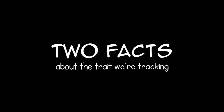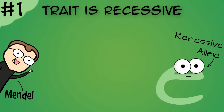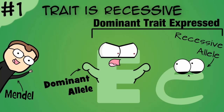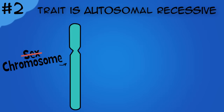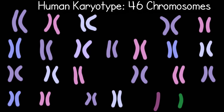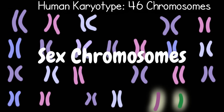Here are two important facts about the particular trait I am choosing to track. Fact number one is that it's recessive. Recall that in typical Mendelian inheritance, dominant alleles, if present, will lead to the expression of dominant traits. Recessive alleles are only expressed when the dominant allele is not present. Fact number two is that it is an autosomal recessive trait. Autosomal means a chromosome that is NOT a sex chromosome. In human body cells there are 46 chromosomes. The first 44—22 pairs—are autosomes. The last two—one pair—are sex chromosomes.